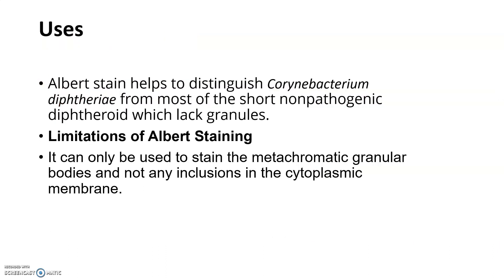The uses of Albert staining: it helps to distinguish Corynebacterium diphtheriae from most of the short non-pathogenic diphtheroids which lack granules. Limitation: it can only be used to stain metachromatic granular bodies and not any other inclusions in the cytoplasmic membrane.